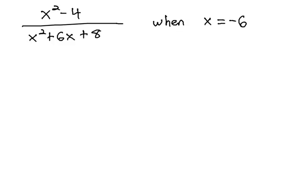In this video, we're going to look at evaluating a rational expression at a point. We're told that x squared minus 4 is over x squared plus 6x plus 8, and we want to evaluate this rational expression when x is equal to negative 6.